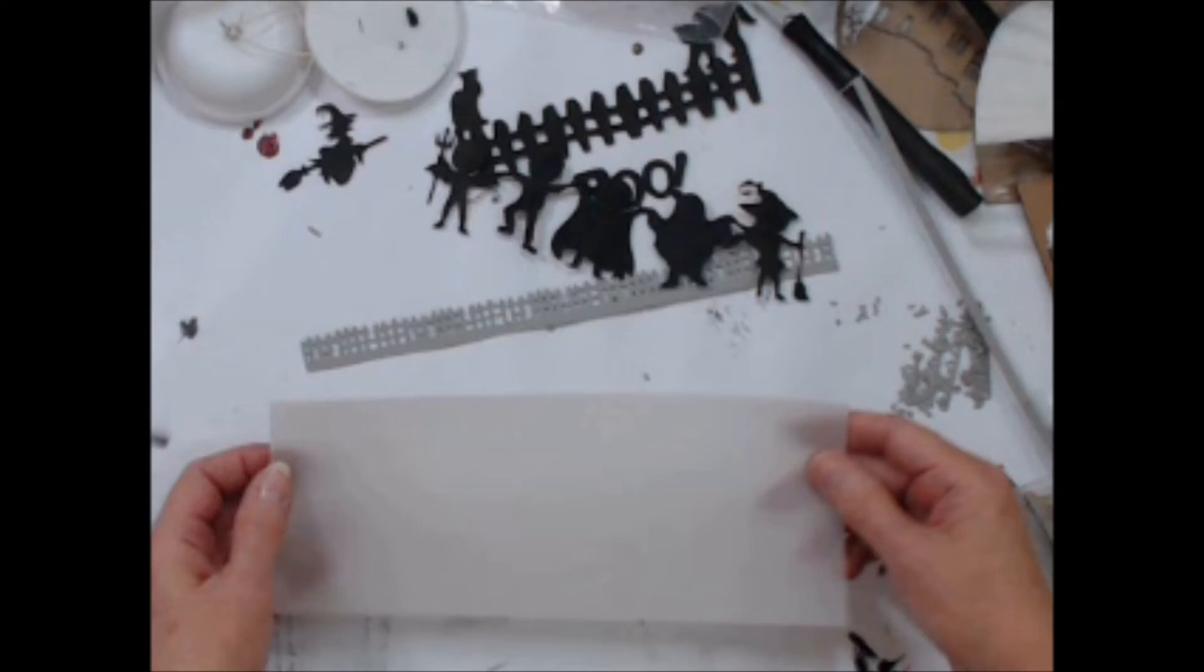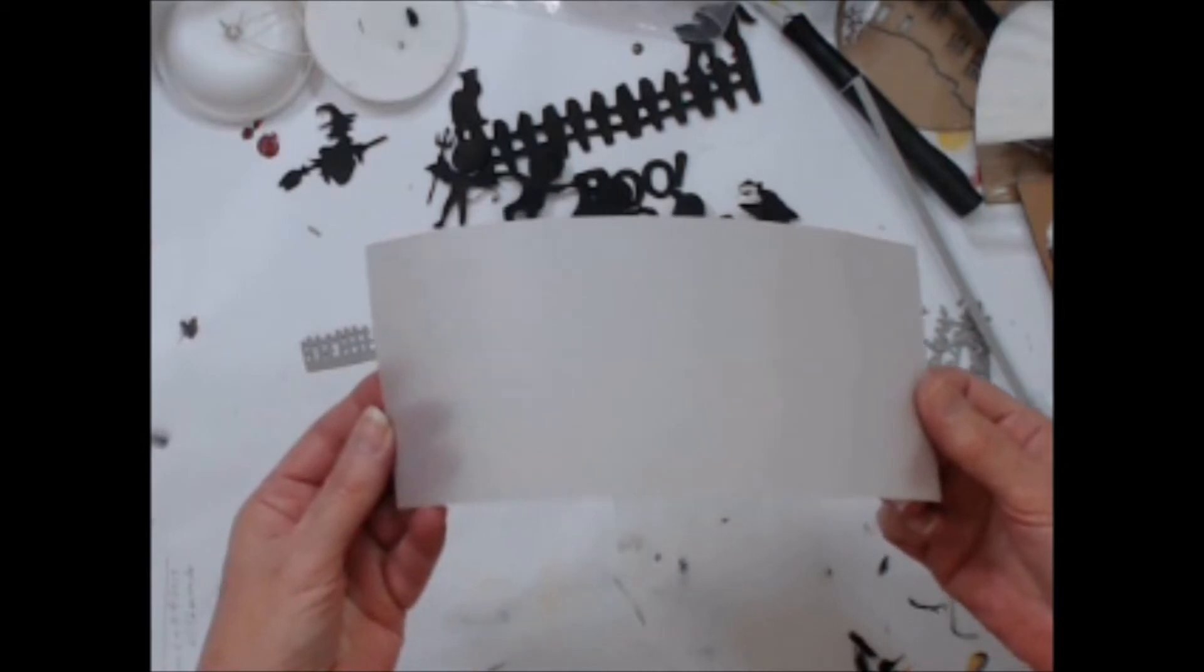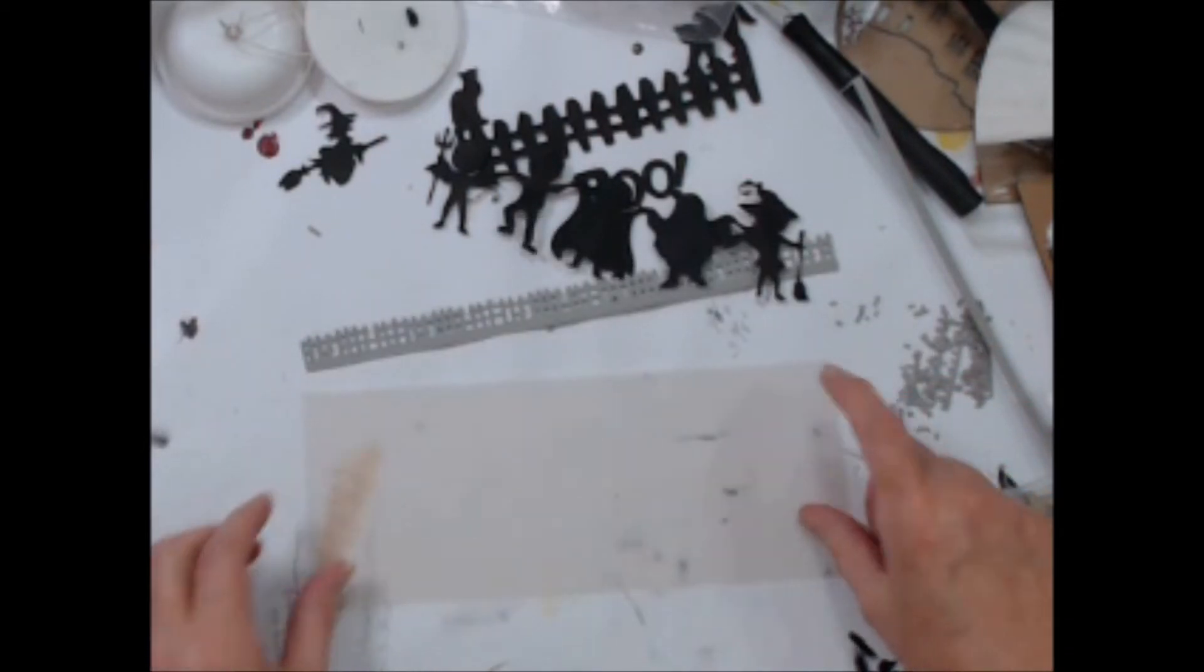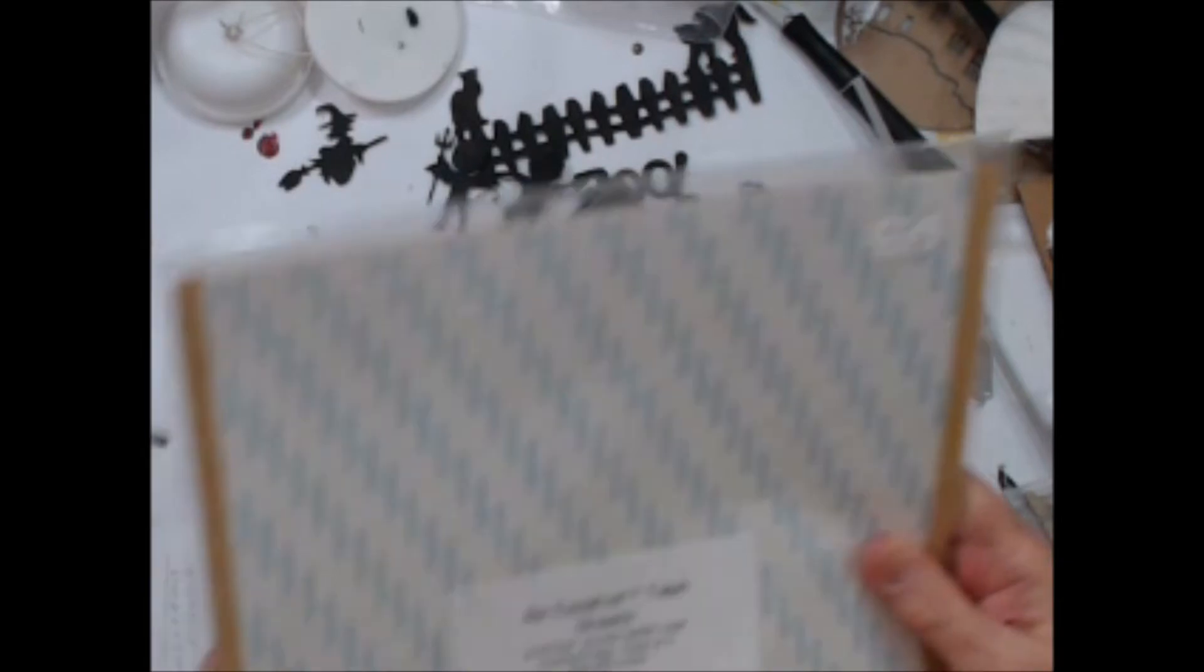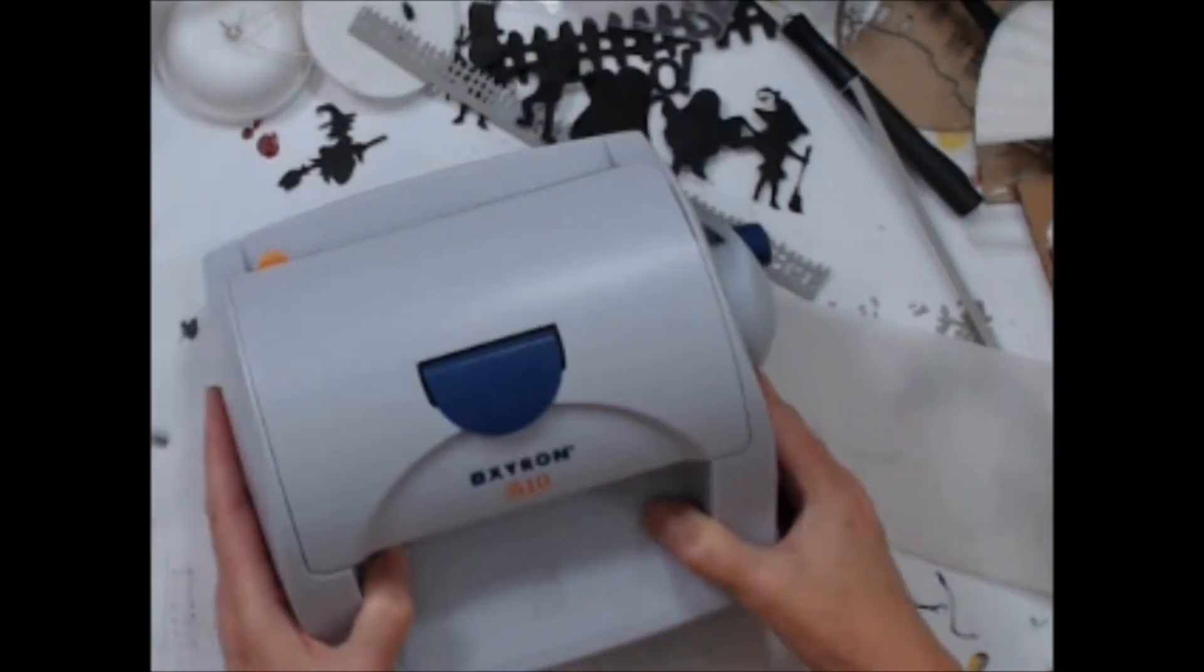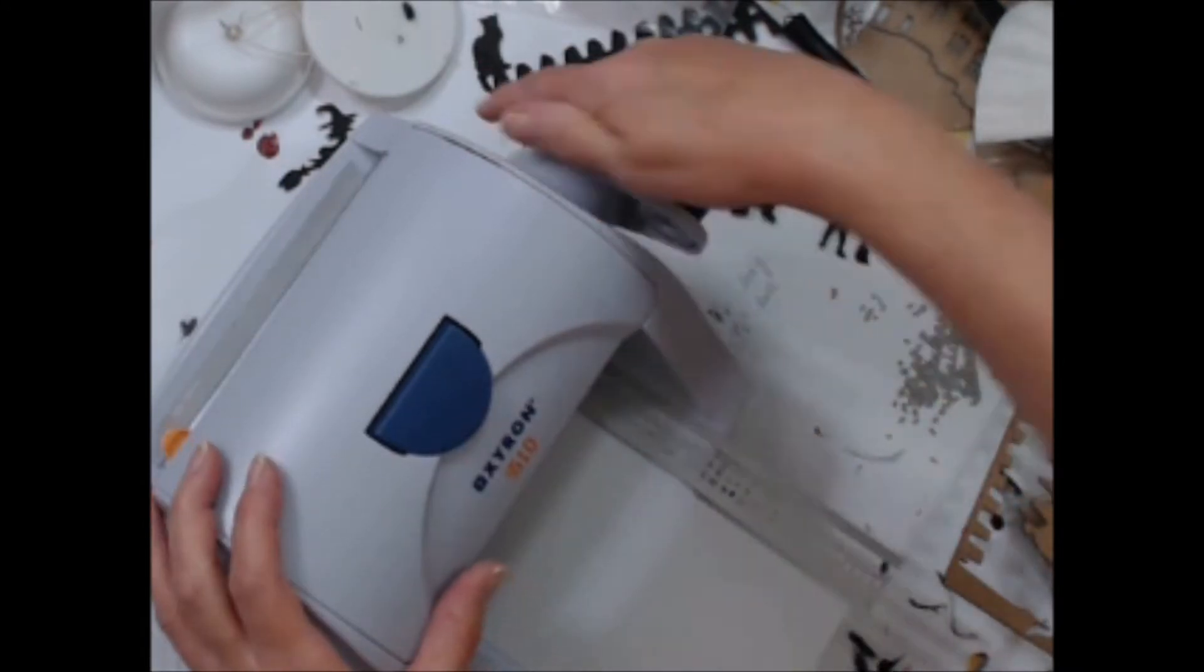When gluing things to parchment paper, it is very important to use a dry adhesive rather than liquid glues. The parchment will often buckle and look like a mess, and the glue will be seen through the paper. Therefore, you can either use double-sided tape sheets, such as this, or if you have a Xyron machine, you can then run all your pieces through it for attaching.